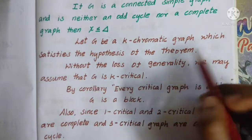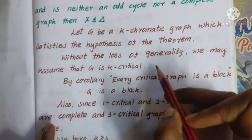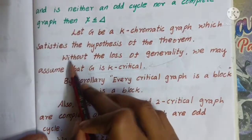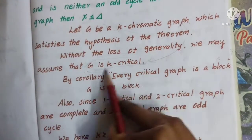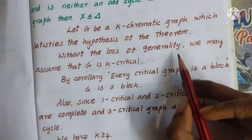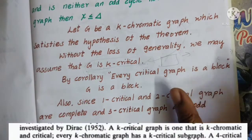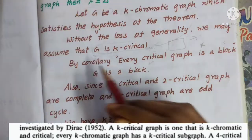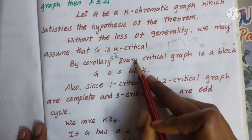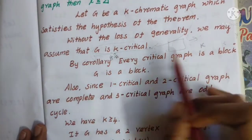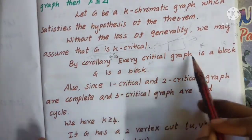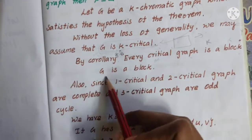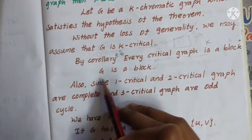This graph satisfies the hypothesis of the theorem. Without loss of generality, we may assume that G is k-critical. In the k-critical level, there will be an effect on this theorem. By corollary 8.2, every critical graph is a block. Since G is k-critical, every critical graph is a block, so G is a block.